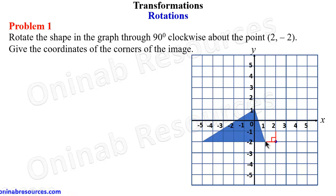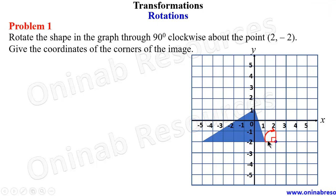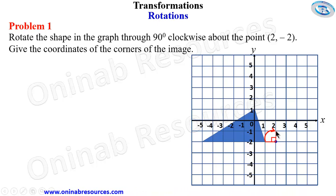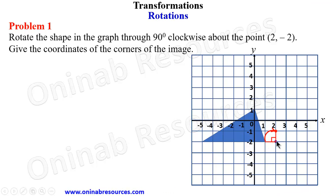This is the direction, which means this point of the triangle moves to this point. Since the center of rotation is one unit away from the object, the image must also be one unit away from the center of rotation. We have that point here and this point here. Counting the units: one, two, three, four, five, six, seven.